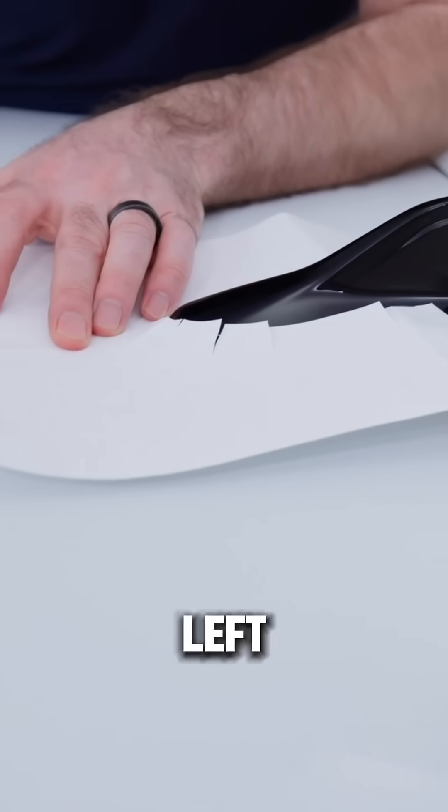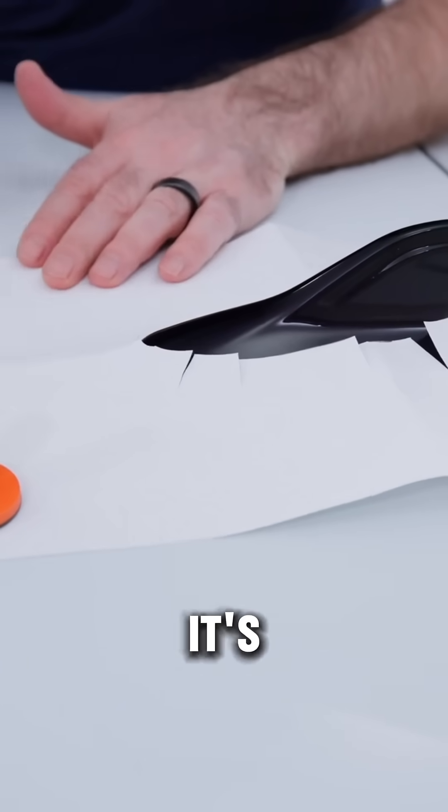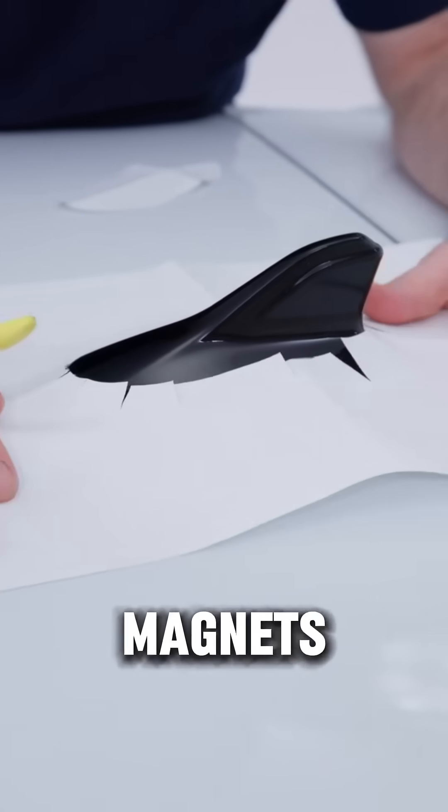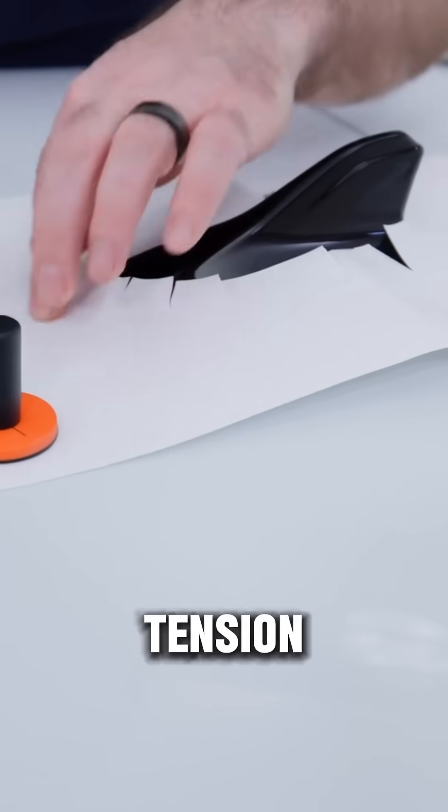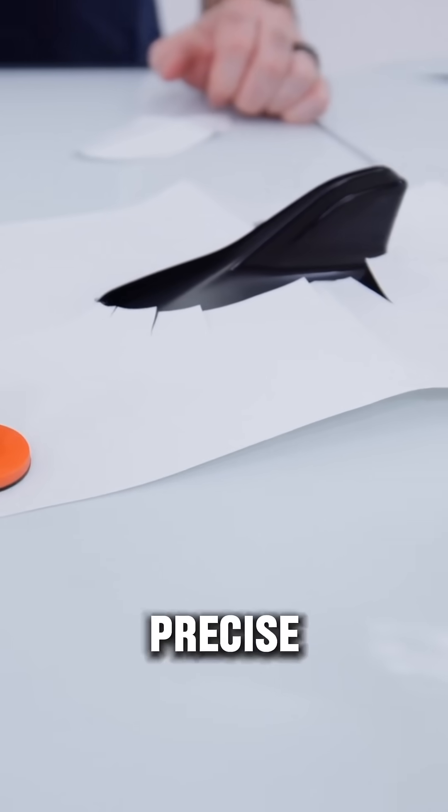And you want to make sure it's symmetrical, left to right, top to bottom. Once it's symmetrical left to right, places the magnets on to secure it in place. Make sure there's even tension. This is very important because you want this as precise as possible.